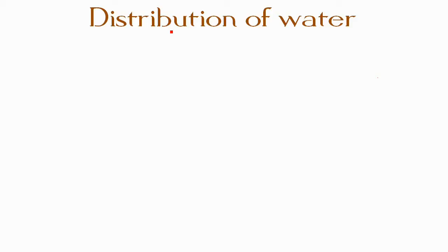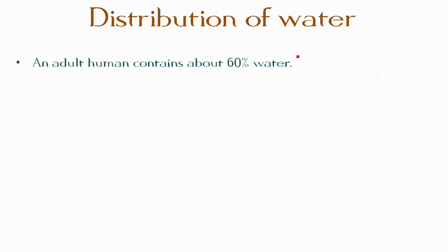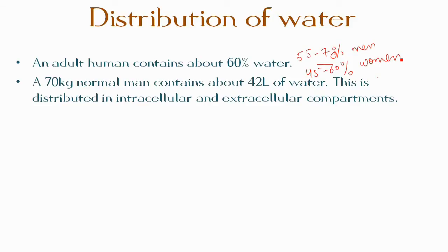Water is the major body constituent. An adult human contains about 60 percent water — about 55 to 70 percent in men and about 45 to 60 percent in women. Women and obese individuals have relatively less water due to the higher content of stored fat in an anhydrous form. A 70 kg normal man contains about 42 liters of water, distributed in intracellular and extracellular compartments.